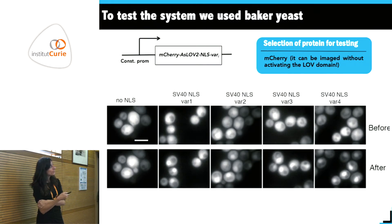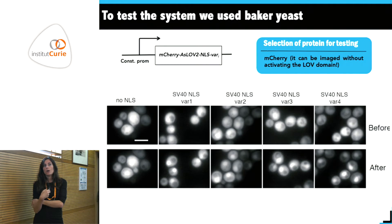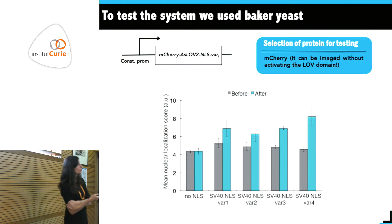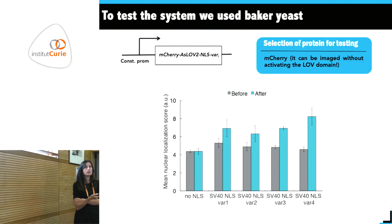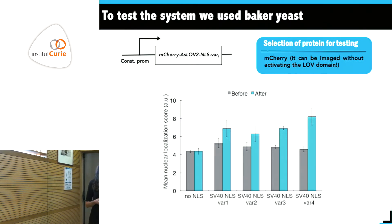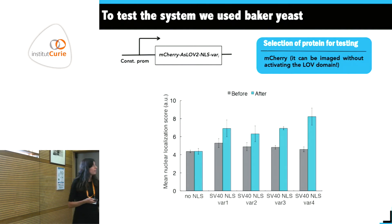What matters is that there is no change in localization between light and dark for the control, while for all other variants, after blue light there is a stronger accumulation inside the nucleus. Quantification shows that all variants have increased nuclear localization after blue light. The effect is mild — not several-fold differences — but it was good enough to proceed toward mammalian cells, which was our real target.